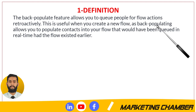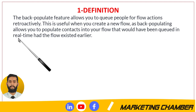This is useful when you create a new flow, as back populating allows you to populate contacts into your flow that would have been queued in real time. Back populating includes subscribers who fulfilled the criteria of your flow and fall within the time span. For example, if your flow has three emails — first after 30 days, second after 10 days, third after 10 days — the total time span is 50 days. If someone qualified within those 50 days, they will be back populated.